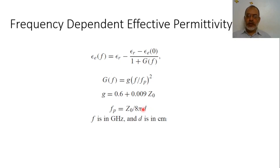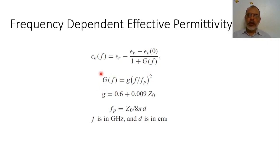Here, Z_0 is the characteristic impedance of the quasi-static microstrip line in ohms, f is the operating frequency in gigahertz, and f_B is defined as Z_0 over 8 times pi times D, where D is the substrate thickness in centimeters. Since D is given in centimeters, we can obtain the value of g, the value of f_B, and hence the function G(f), allowing us to obtain the effective epsilon as a function of frequency.